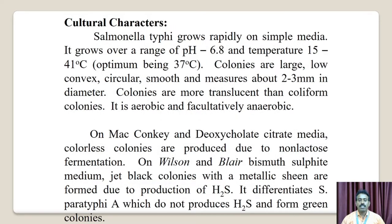Cultural characteristics. Salmonella Typhi grows rapidly on simple media. It grows over a pH range of 6.8 and temperature of 15 to 41 degrees Celsius, with an optimum of 37 degrees Celsius. The colonies are large, low-convex, circular, smooth and measure about 2 to 3 millimeters in diameter. The colonies are more translucent than coliform colonies. It is aerobic and facultatively anaerobic.